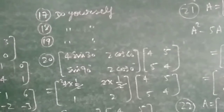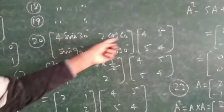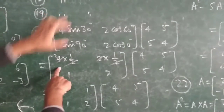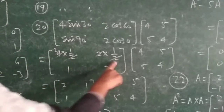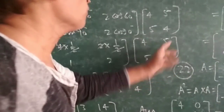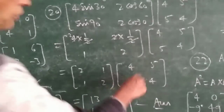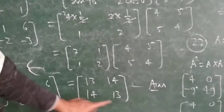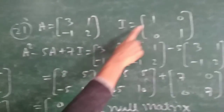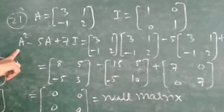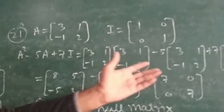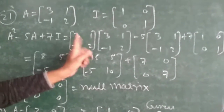Questions 17, 18, and 19 are the same type — do them yourself. Question 20: the matrix has entries 4·sin 30°, 2·cos 60°, sin 90°, 2·cos 0°. Substituting: 4×(1/2)=2, 2×(1/2)=1, sin 90°=1, cos 0°=1 so 1×2=2. Combined with [4, 5; 5, 4]. On multiplying, we get [13, 14; 14, 30]. This is your answer.